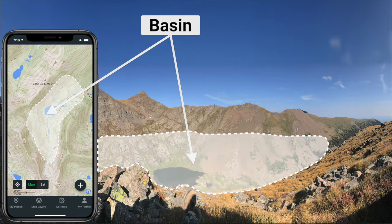A basin is a larger bowl-shaped terrain feature where the lower elevations are typically gentle and fertile where the streams collect. Draws and ravines are smaller land features with similar characteristics, but they're a bit more narrow.